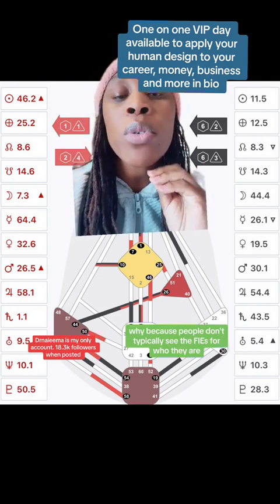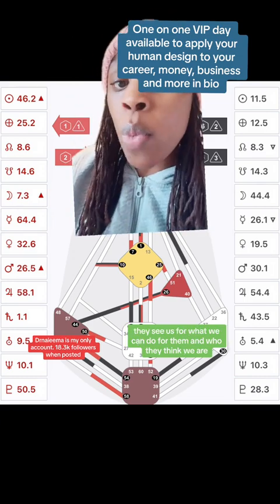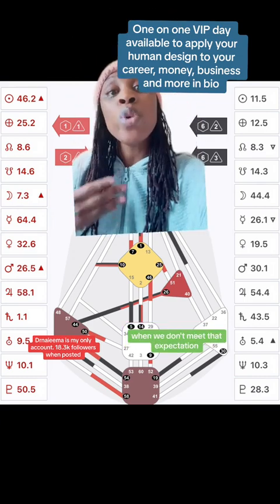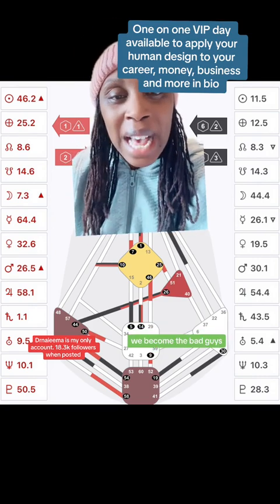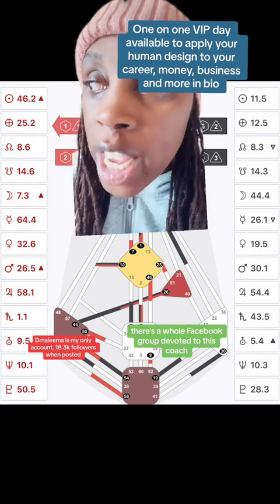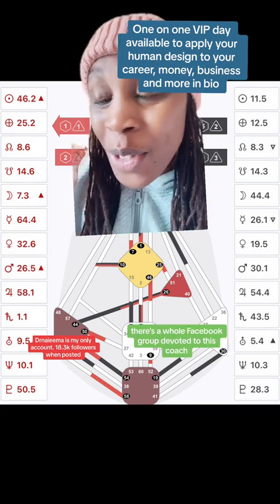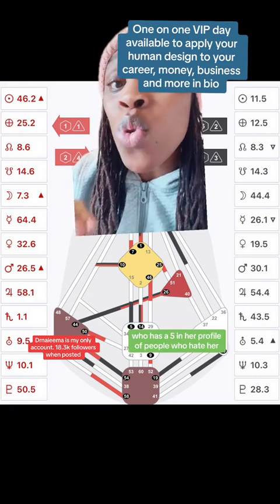Because people don't typically see the fives for who they are. They see us for what we can do for them and who they think we are. When we don't meet that expectation, we become the bad guys. People talk about us. People try to destroy us. There's a whole Facebook group devoted to this coach who has a five in her profile of people who hate her.